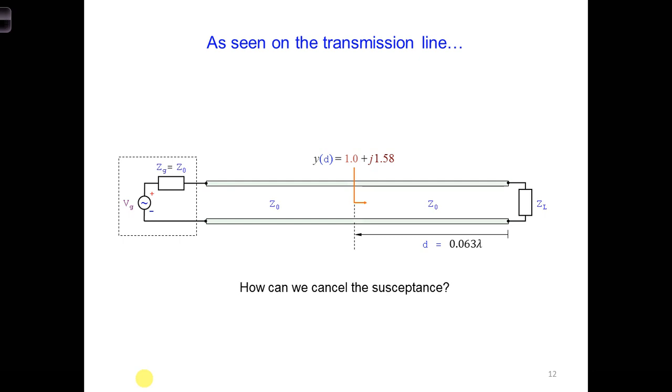This diagram shows the scenario we have now. We have moved 0.063 lambda wavelengths away from the load. At that position, the normalized input admittance, which takes into account the rest of the transmission line and the load, is a total of 1 plus J 1.58.